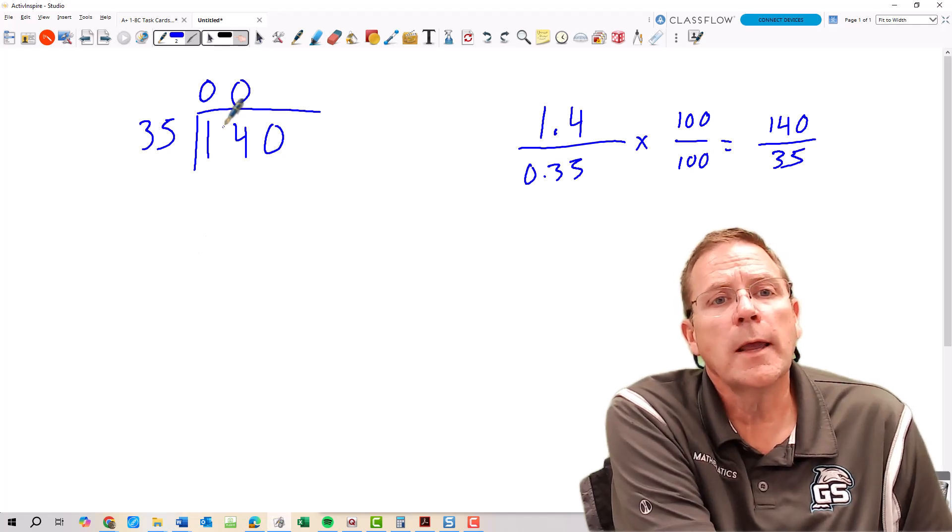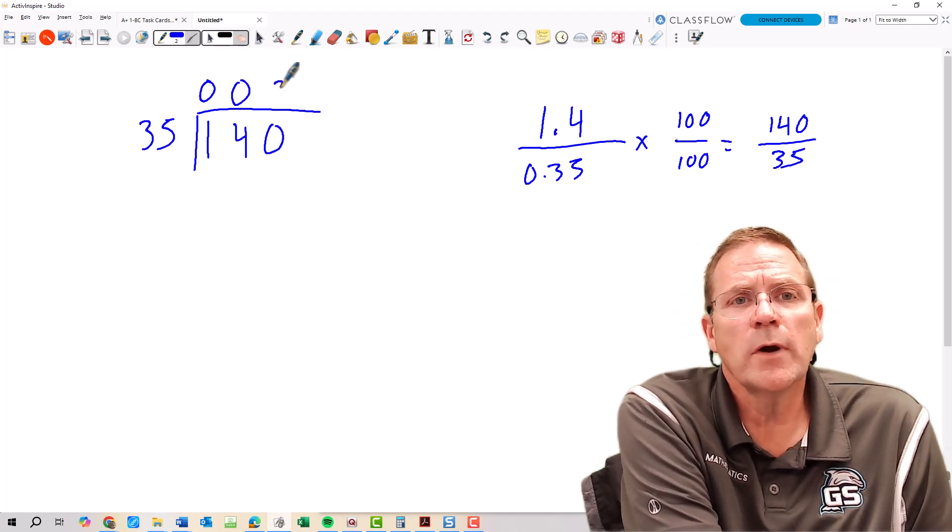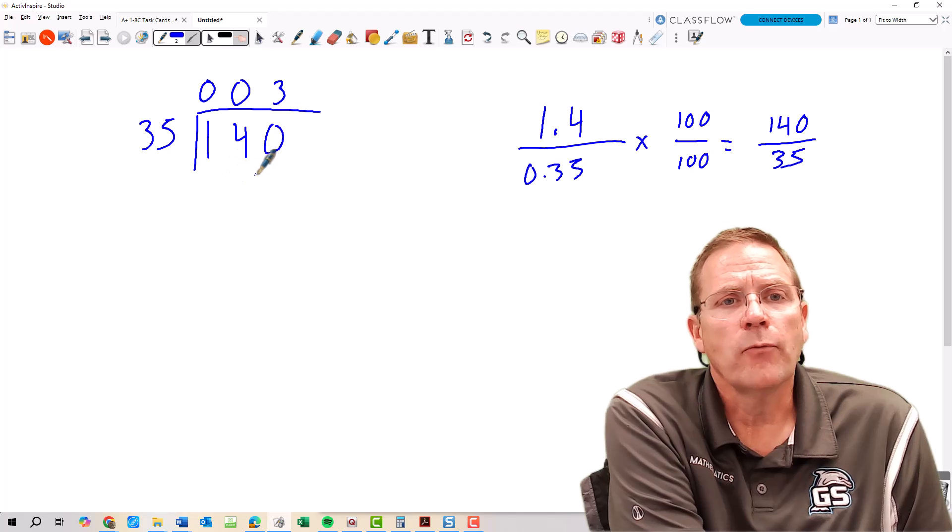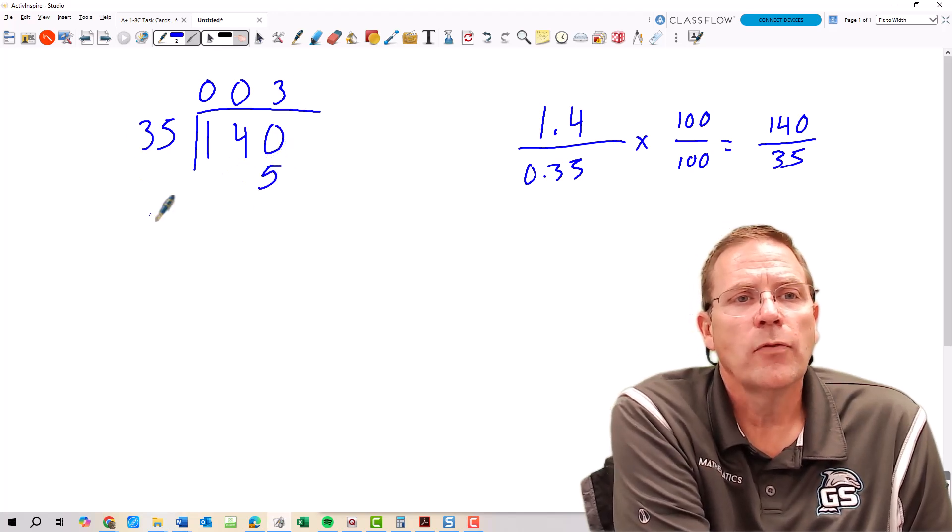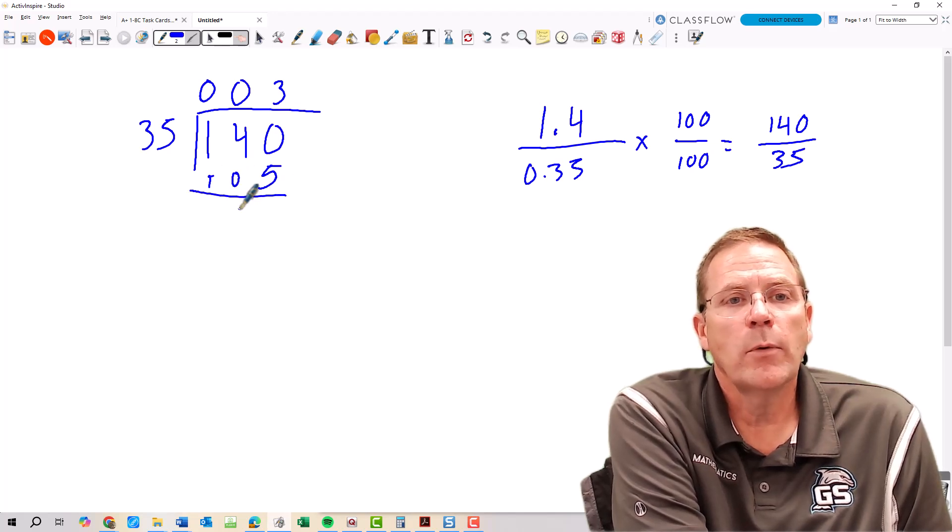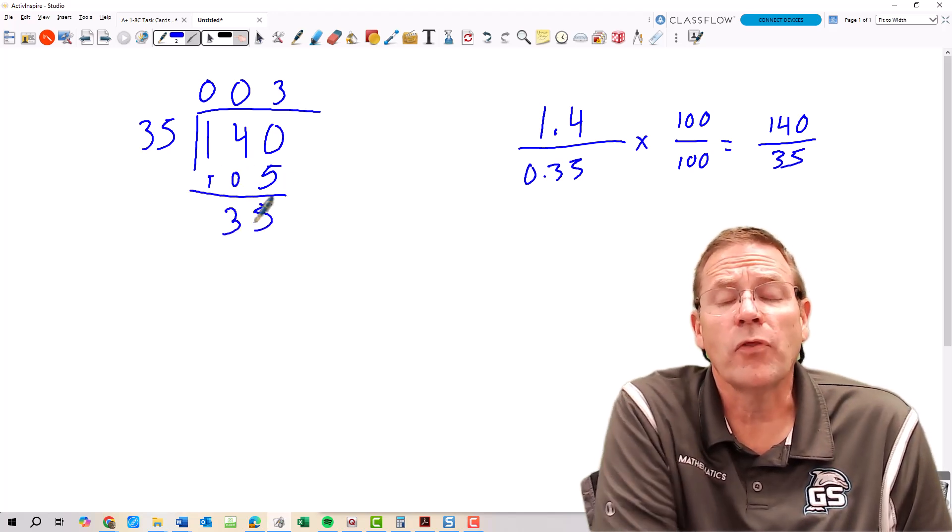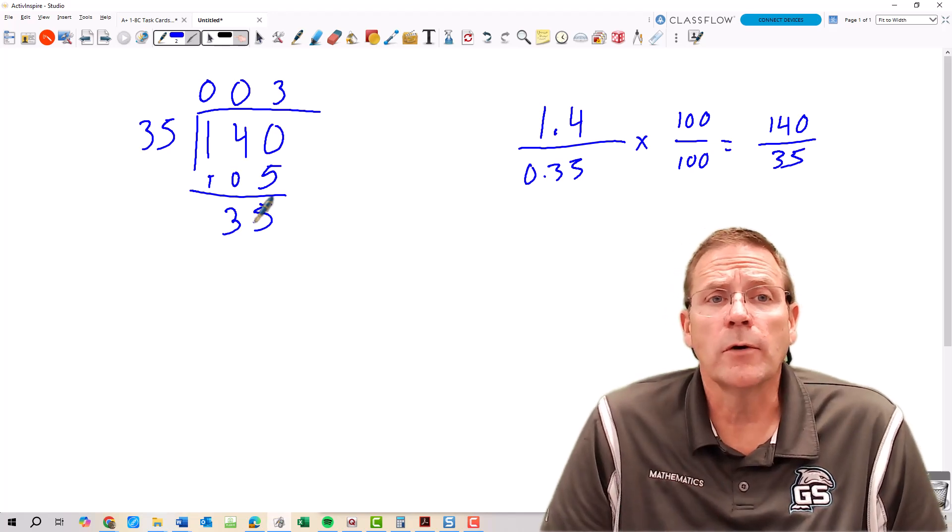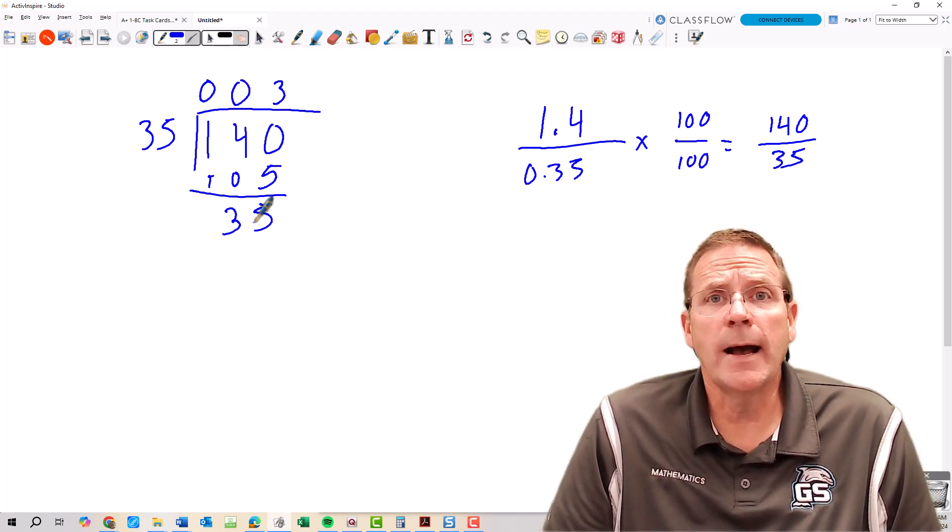So we're going to take and just try, I don't know, let's just try 3 and see what happens. 3 times 5, that's going to be 15. 3 times 3, that's going to be 9 plus 1 is 10, and when we subtract that we have 35 whole units left over. That means 3 was not the correct answer.